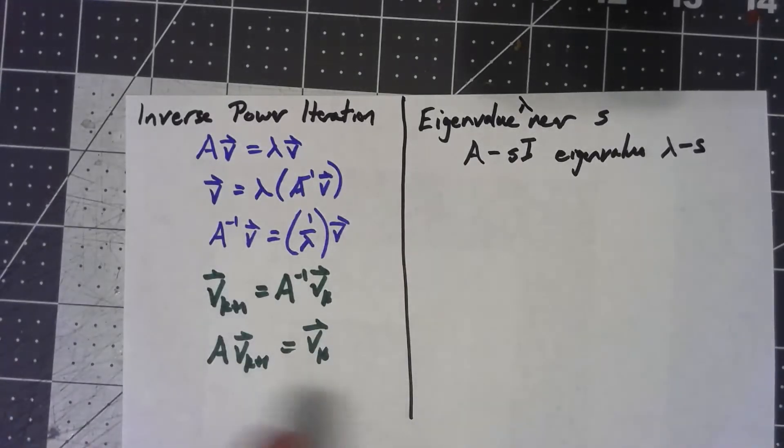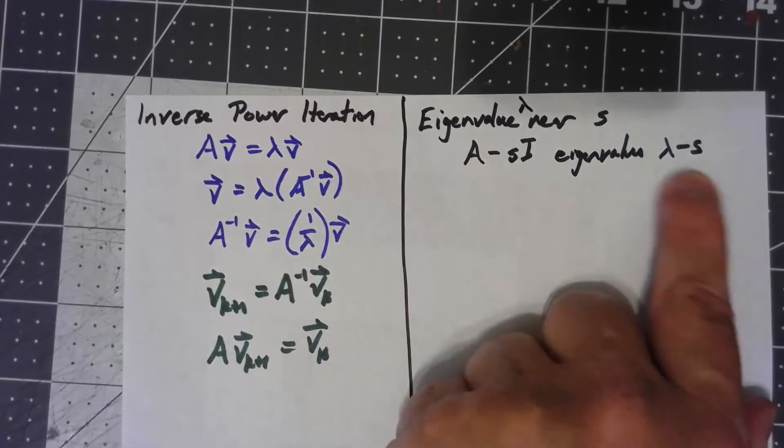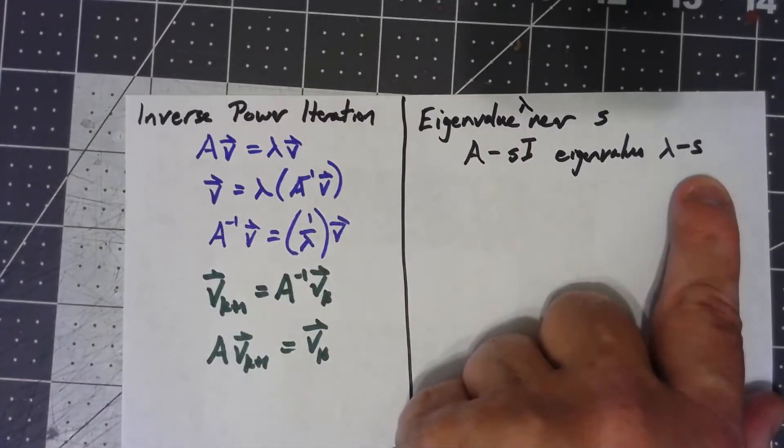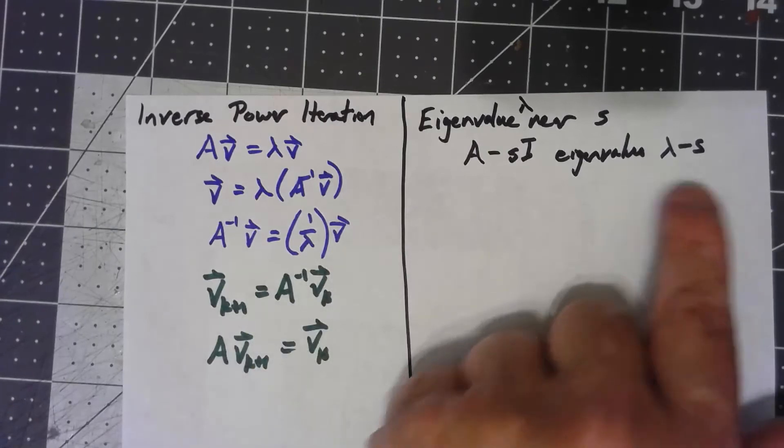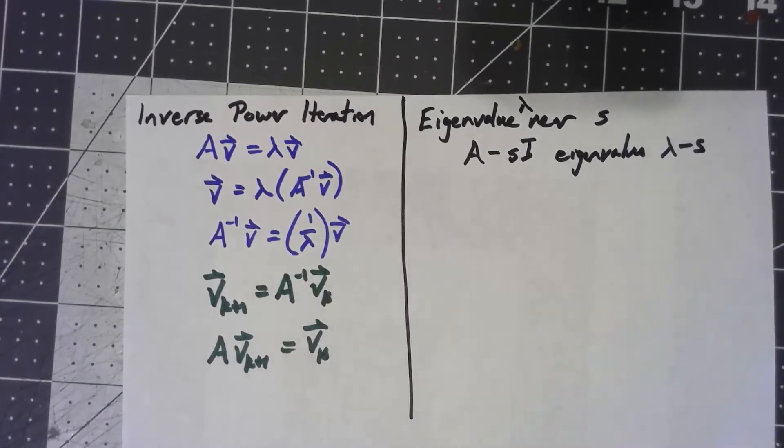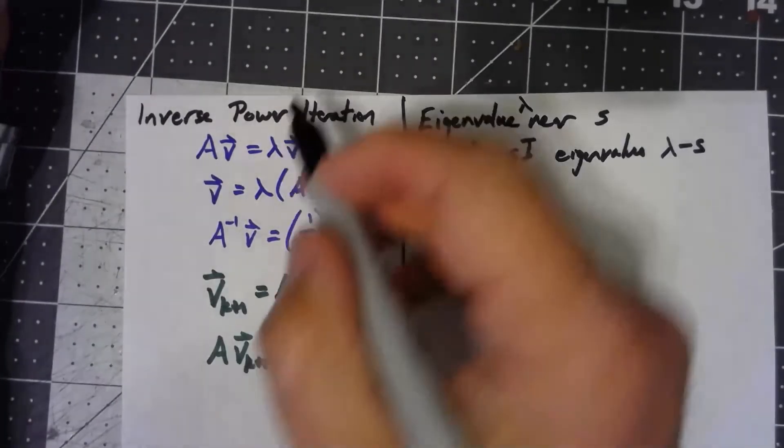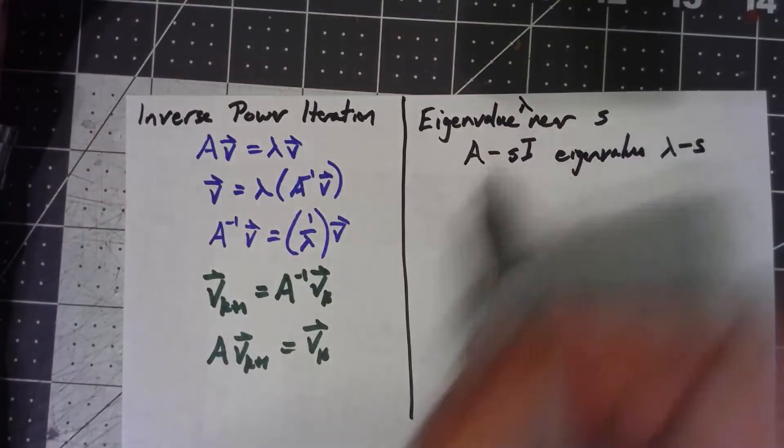By finding this eigenvalue here, this is the smallest eigenvalue of A minus s I, this inverse power iteration will find it.